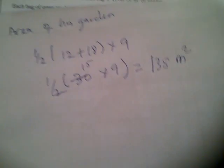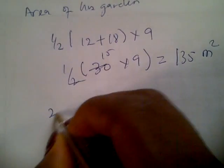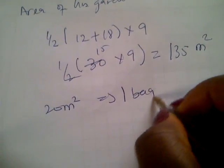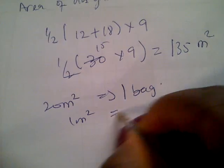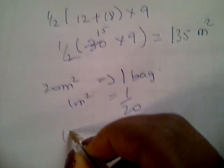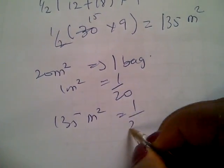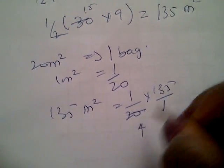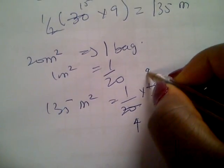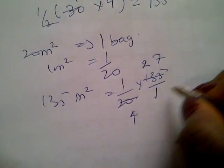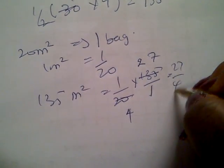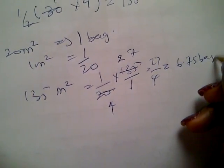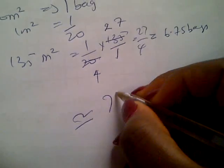We're told that one bag covers 20 meters squared. So one meter squared would be 1 over 20. 135 meters squared will be 1 over 20 times 135 over 1, which is 27 over 4, and that is 6.75 bags. It's approximately seven bags.